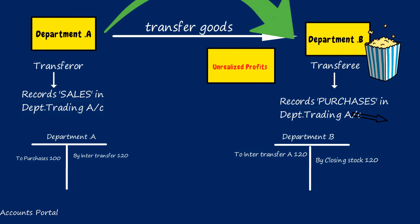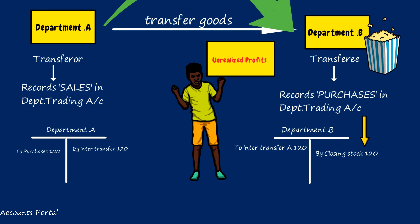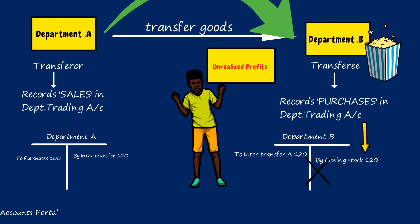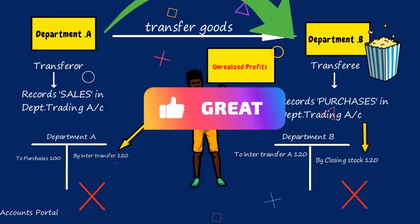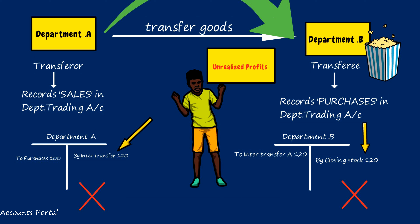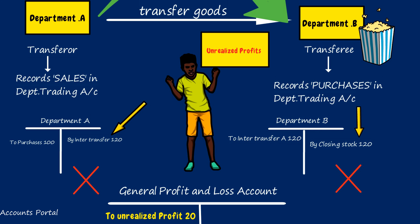The unrealized profit is included in Department B's stock. So, unrealized profit shall be eliminated — but from whose profit? Not from B, because in B's books there is a debit of ₹120 as purchases and a closing stock of ₹120, meaning no profit is booked in B. A booked the profit. But we will not eliminate it from A's profit either. Unrealized profit will be eliminated from the General Profit and Loss Account — because eliminating it from the transferring department defeats the basic purpose of booking the profit.